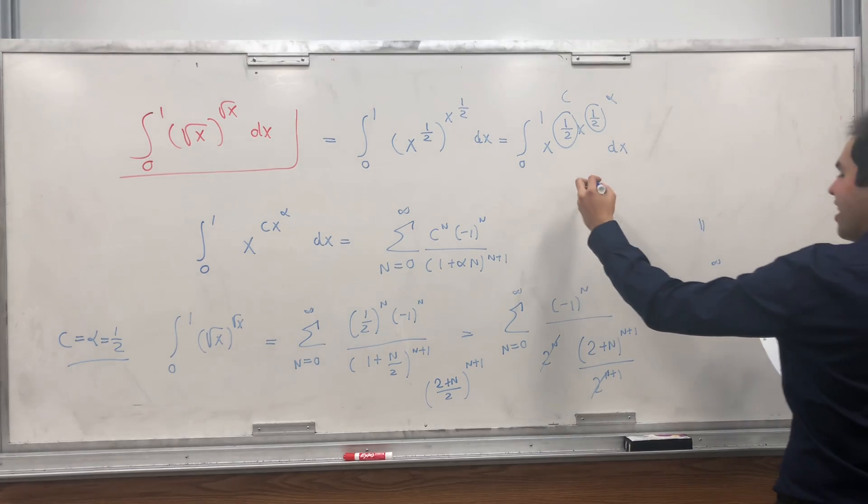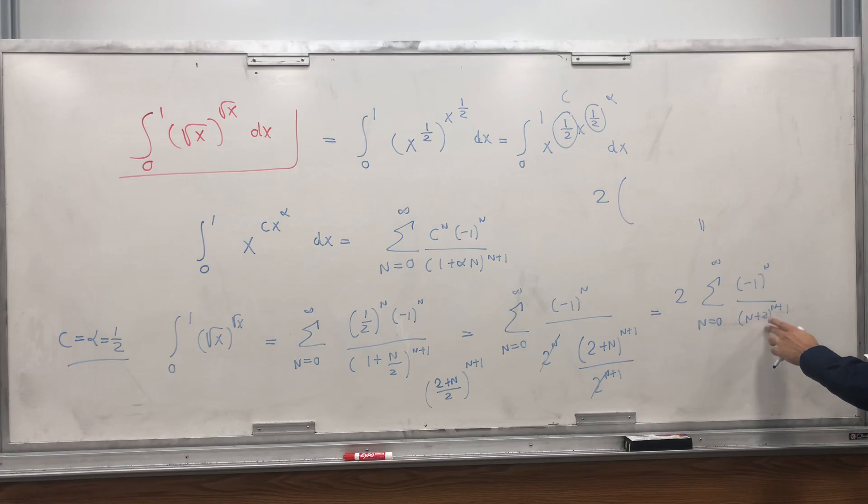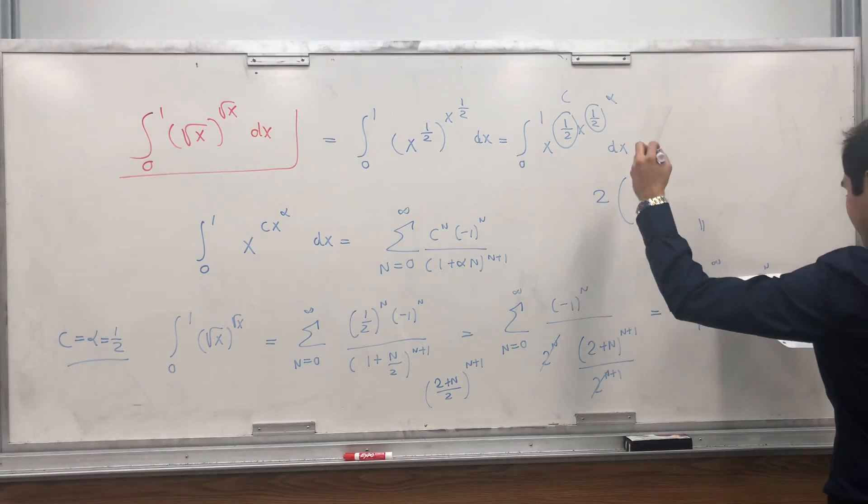Which if you want to write as a series, that gives you 2 times, so n equals 0, 2 to the 1, I think, yeah.